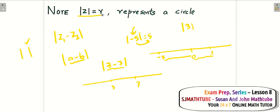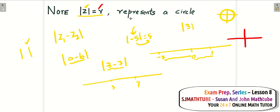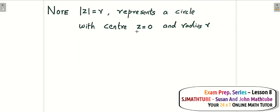Now look at |z| = r. Here z stands for the complex number x + iy. This means you collect all complex numbers whose distance from the origin equals r. That gives you a circle. |z| = r represents a circle because modulus of (x + iy) equals r means the distance of the complex number x + iy from the origin is r. Collecting all those points gives a circle with center at the origin and radius r.